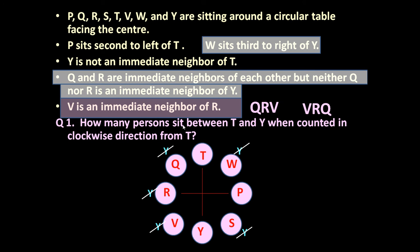Once this formation is completed, we can answer the question: how many persons sit between T and Y when counted in the clockwise direction? Counting clockwise from T to Y, we get 1, 2, 3. So between T and Y, three persons are sitting. The answer is 3.